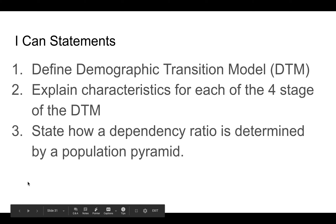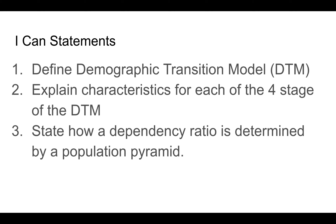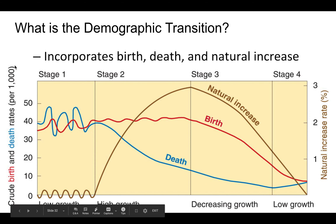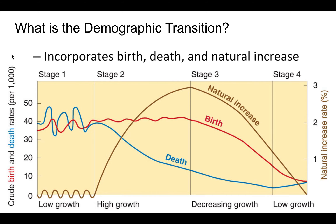The I-can statements are: define the DTM — the demographic transition model; explain characteristics for each of the four stages of the demographic transition model; and state how a dependency ratio is determined by a population pyramid. The DTM graphic shows four stages measured by crude birth rate, crude death rate, and natural increase rate — the three measurements human geographers use to place a country within the model.